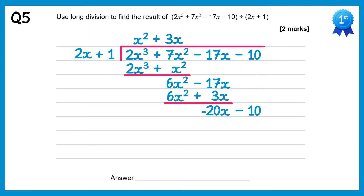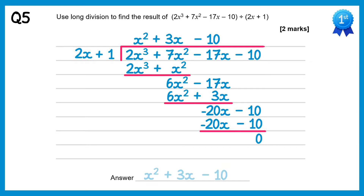Bring down the final term, this negative 10. Negative 20x divided by 2x gives you negative 10. Multiply negative 10 back through: negative 10 times positive 2x is negative 20x, negative 10 times 1 is negative 10. Subtract these and you get 0. So the final answer is x squared plus 3x take away 10.